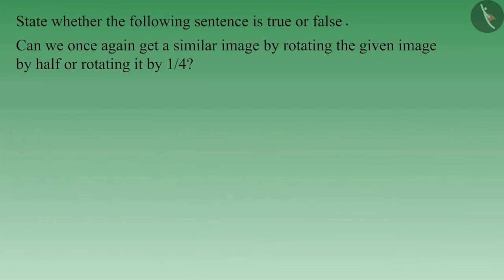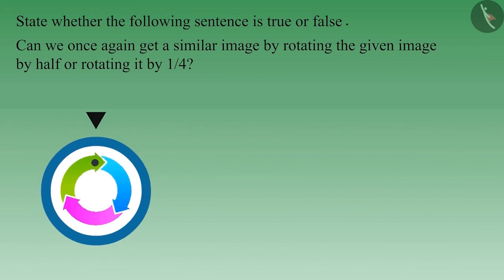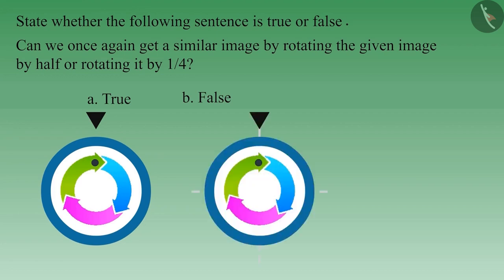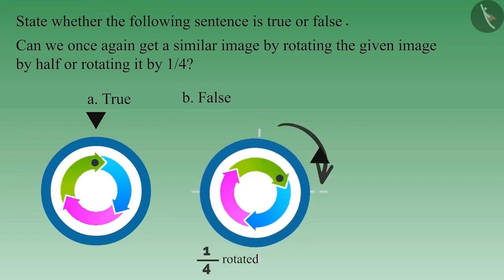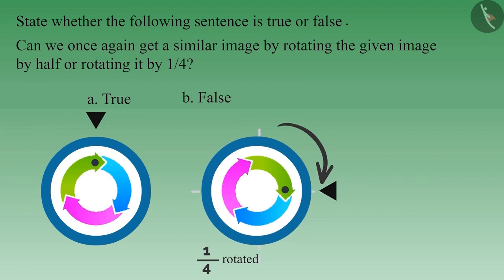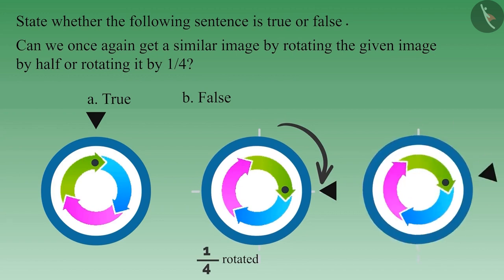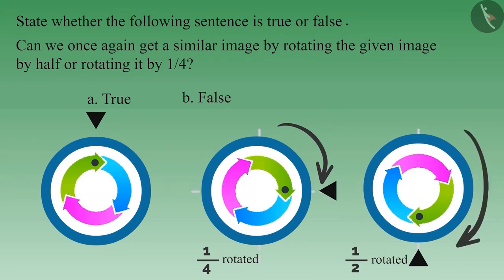Let's look at another example. Can we get the same image by rotating the given image by half or rotating it by one-fourth? If your answer is yes, then think again. If we turn this image by one-fourth, it will look something like this. And if we rotate the original image by half, it will look like this. You have seen here that under no circumstance does it look like before. Therefore, this statement is false.